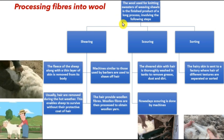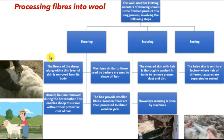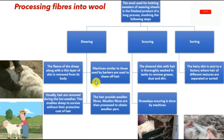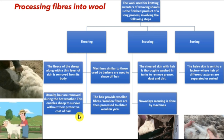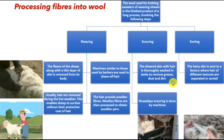Processing fibers into wool involves the following six processes. First, shearing — the fleece of the sheep along with a thin layer of dead skin is removed from its body. Machines similar to those used by barbers are used to shave off hair. Hair is usually removed during hot weather so the sheep can survive without a protective coat. The next process is scouring — the sheared skin with hair is thoroughly washed in tanks to remove grease and dust. Nowadays scouring is also done by machines.